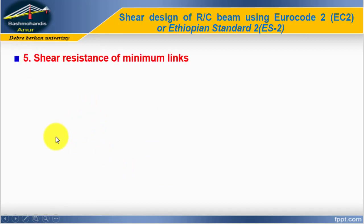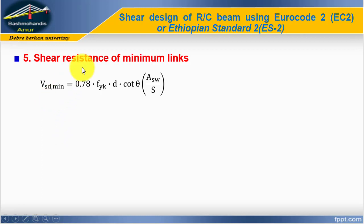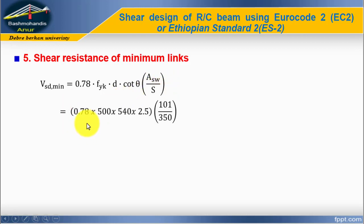Step number five: calculate the shear resistance of the minimum links. We calculate this to determine where the minimum shear links can be used instead of the design shear links. The minimum shear resistance equals 0.78 × fyk × d × cot theta × (Asw/s). This tells us the boundary location between where design reinforcement ends and minimum reinforcement begins.